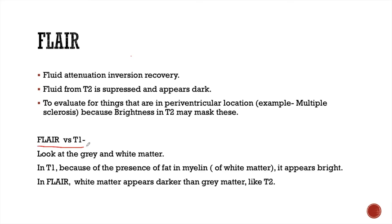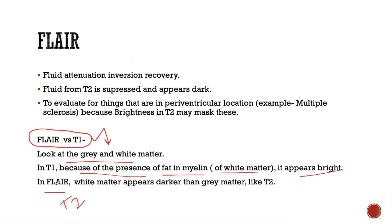FLAIR and T1 may appear similar to each other because fluid is suppressed and the ventricles appear dark in both of them. To differentiate FLAIR from T1, we should look at the grey and white matter. In T1, because of the presence of fat in the myelin of white matter, it appears bright. But in FLAIR, which is based upon T2 weighted image, white matter appears darker than grey matter.